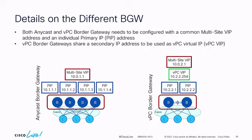Can these two modes interoperate? Yes — you can have an anycast border gateway in one fabric and a VPC border gateway in the other. Even more: one can be VPC and the other anycast in RFC 9014 mode simultaneously. Additionally, CloudSec encryption — VXLAN tunnel encryption — works in both VPC and anycast border gateway mode, and they can interoperate with each other. You can even run CloudSec on two border gateways while a third doesn't understand it — auto-negotiated purely based on BGP EVPN standards.